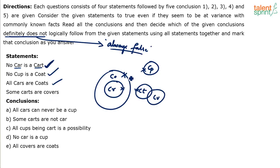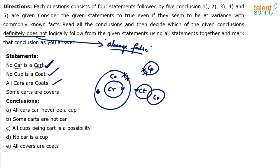I'll put two crosses here so it's easy to identify. Cups cannot touch coats — double cross, double cross. But double cross and single cross can touch each other. So cups can touch carts. Some carts are covers — done.